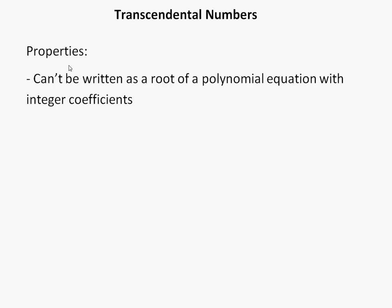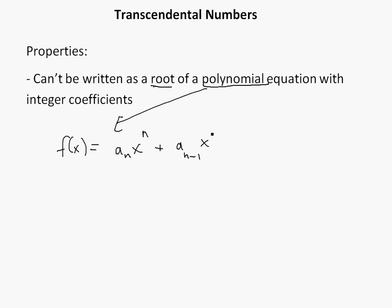One property is it can't be written as a root of a polynomial equation with integer coefficients. On a polynomial, we'll write what this means. So you have f of x equals a-n x-to-the-n, plus a-(n minus 1) x-to-the-(n minus 1), et cetera, all the way down to a-1 x plus a-0. So it can't be written as this where a-i is just basically integers.